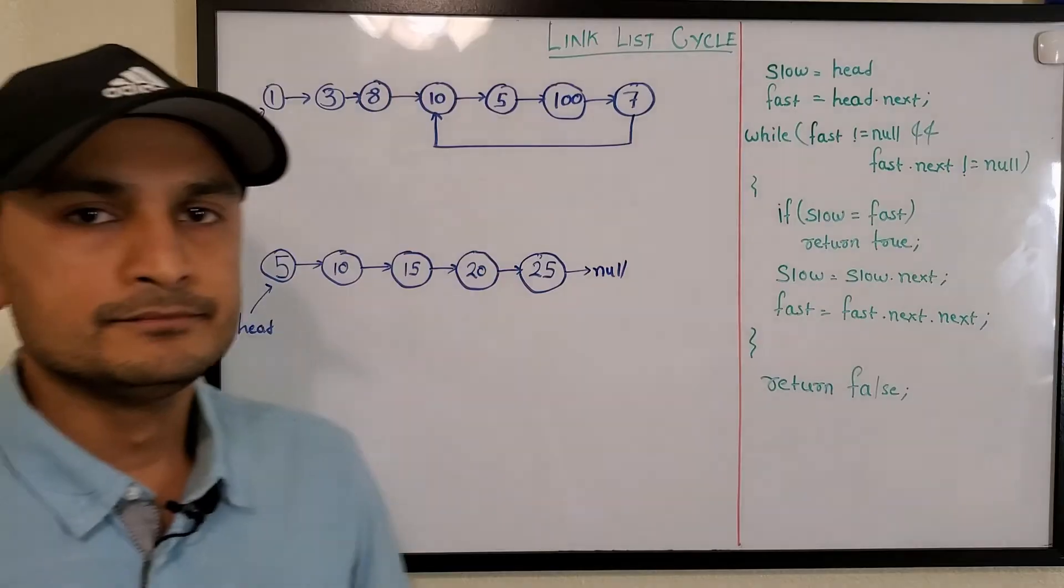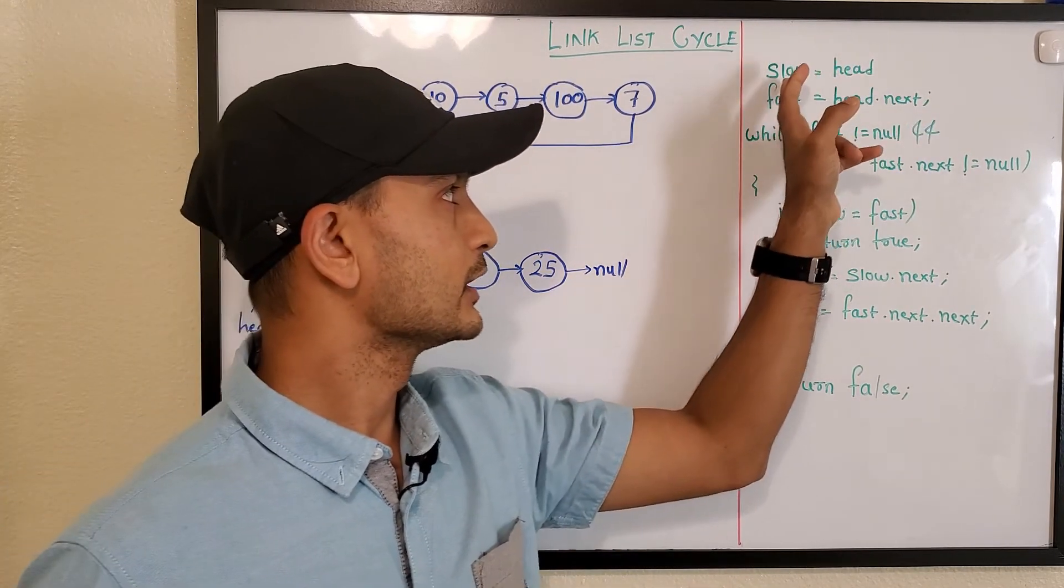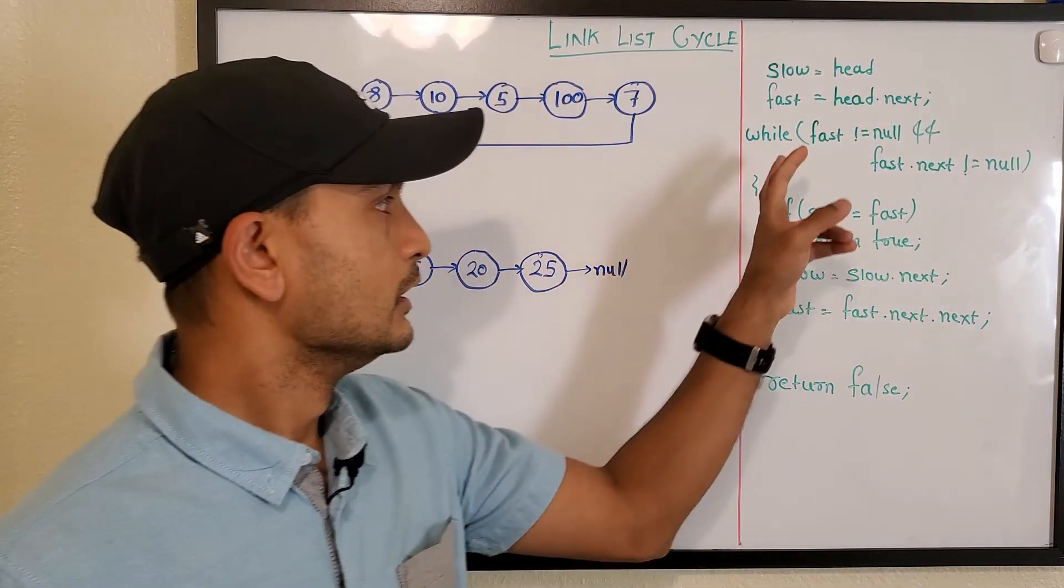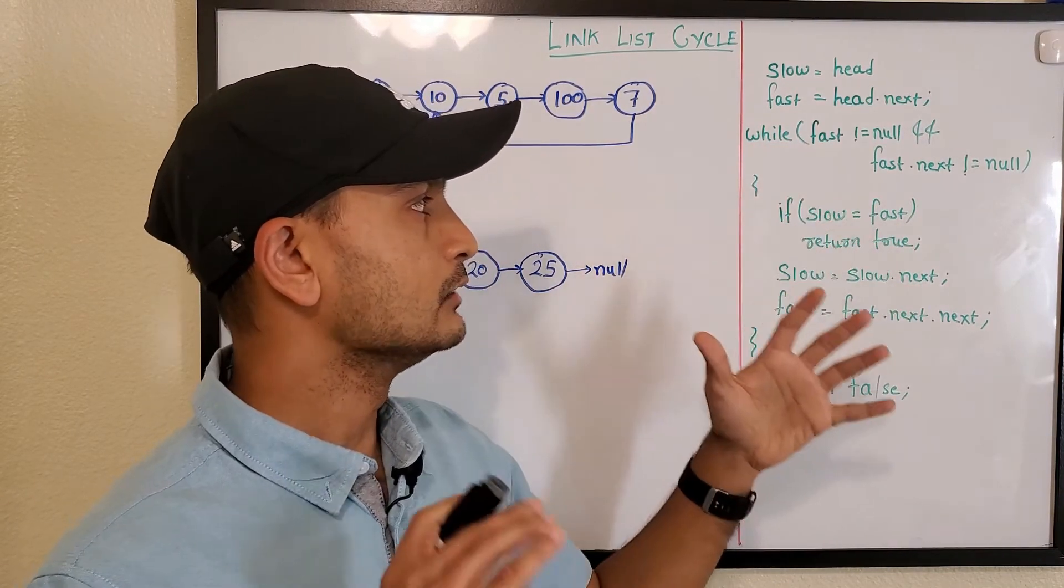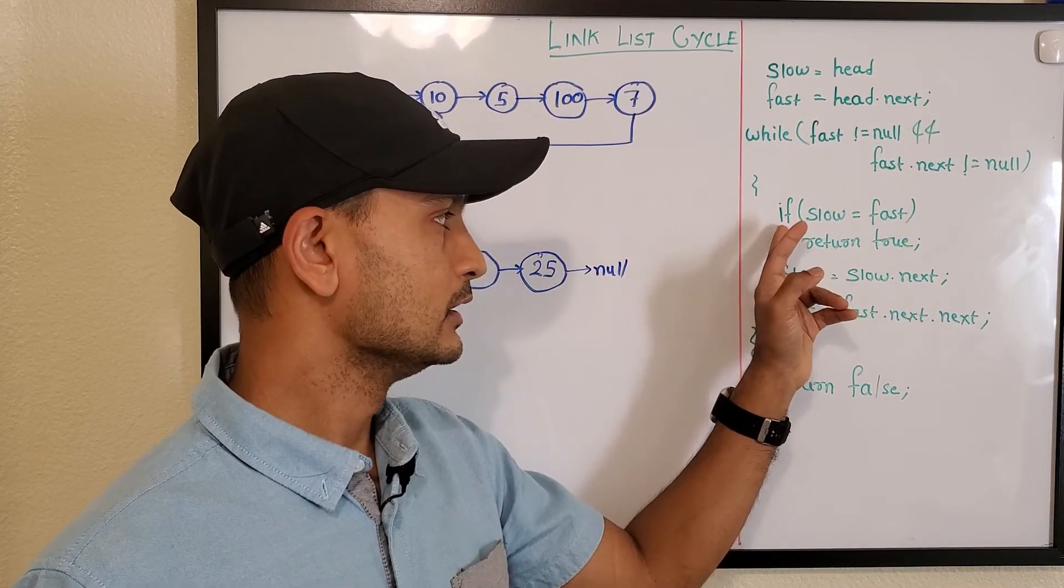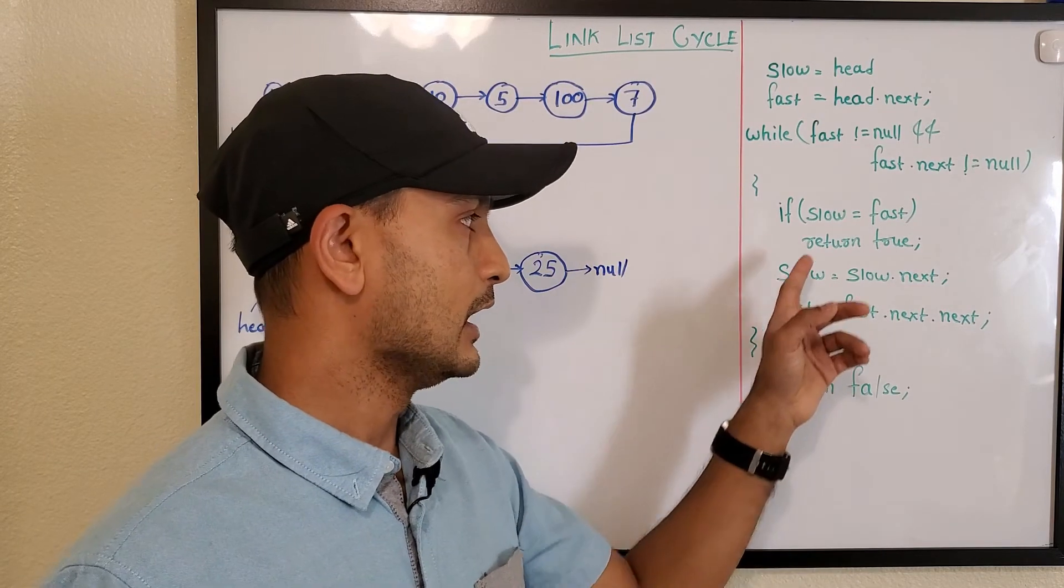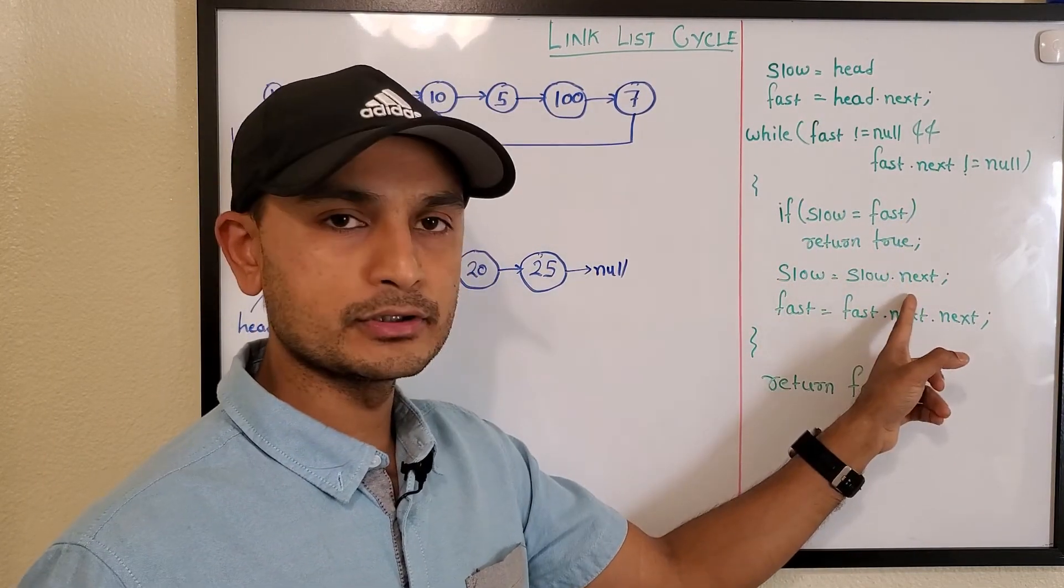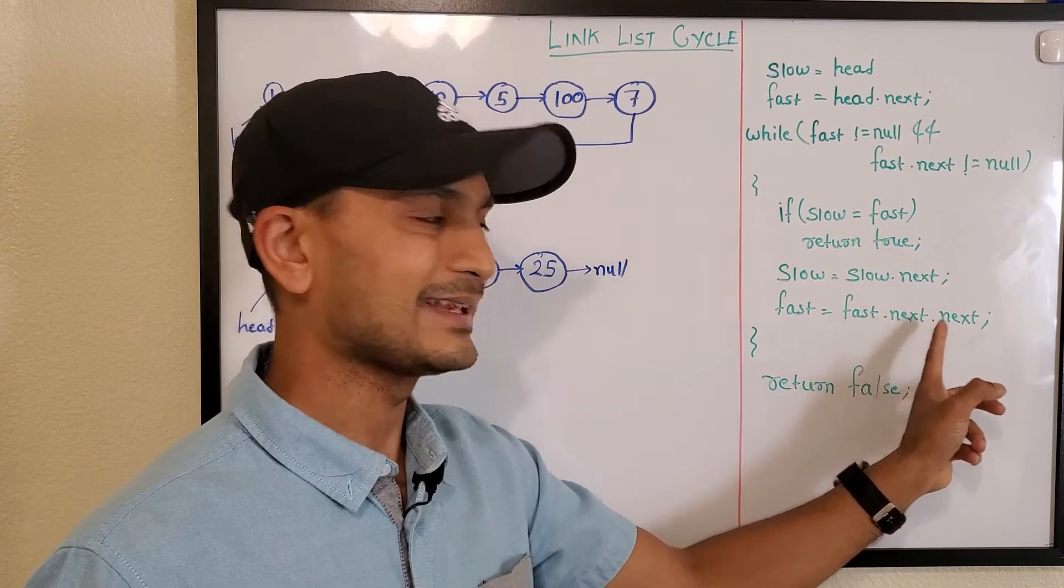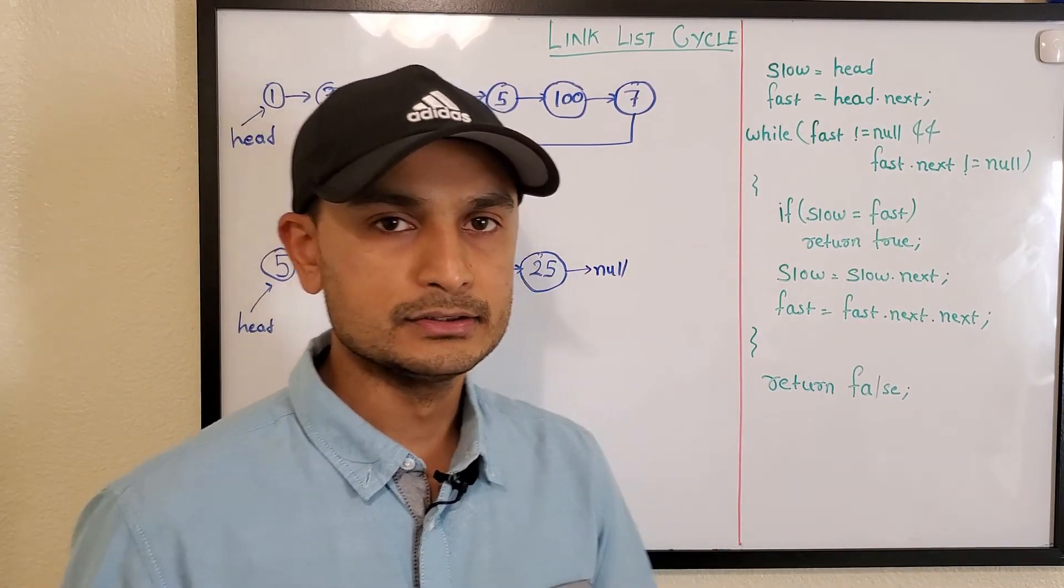Let's read out this algorithm and then visualize it. We declare two pointers, slow and fast. Slow points to head and fast points to head.next. We keep looping till either fast reaches null or fast.next reaches null. If slow equals fast, we return true, meaning we found a cycle. While we don't find that, slow moves to the next pointer by one, but fast moves to the next pointer by two, so fast is fast.next.next. If we exit this loop without this condition, we return false because there's no loop.